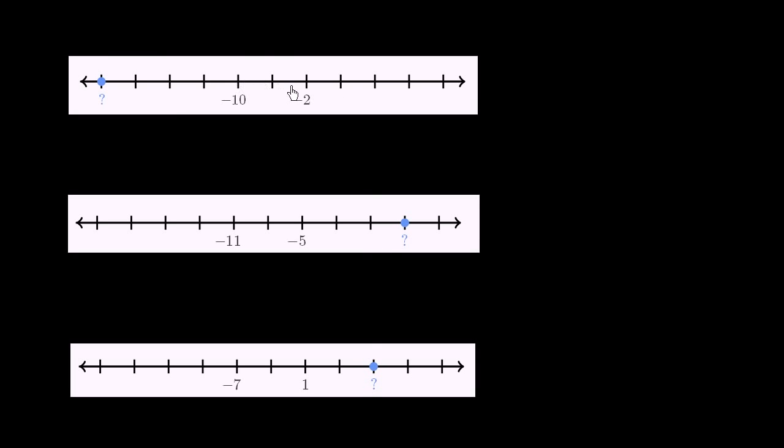So let's tackle this first one. We're going to go where they gave us this mark as negative 2, this is negative 10. And we need to figure out this blue one that's further to the left of negative 10. Well, just going from negative 2 to negative 10, what has to happen to negative 2 to get to negative 10? Well, we'll have to subtract 8.